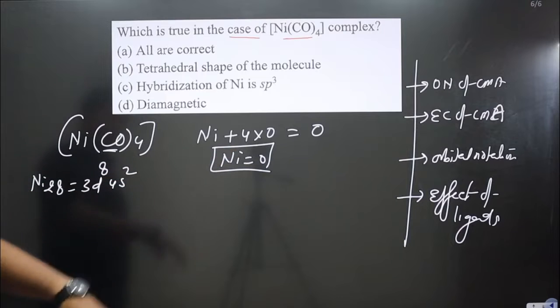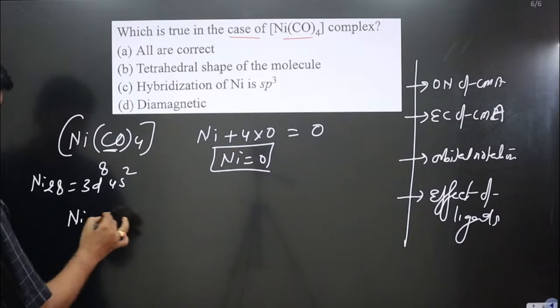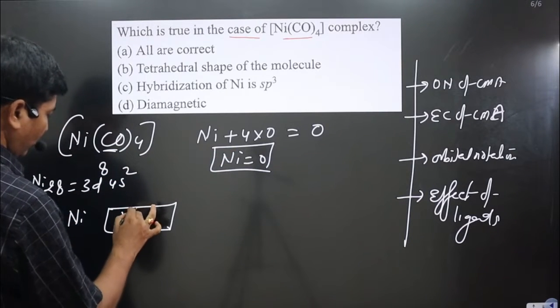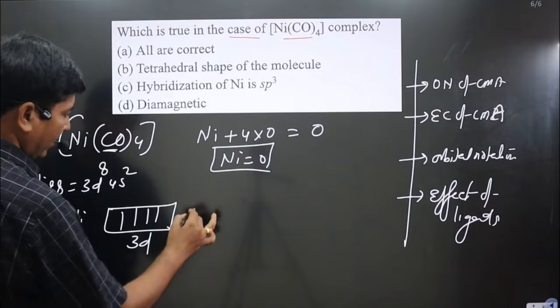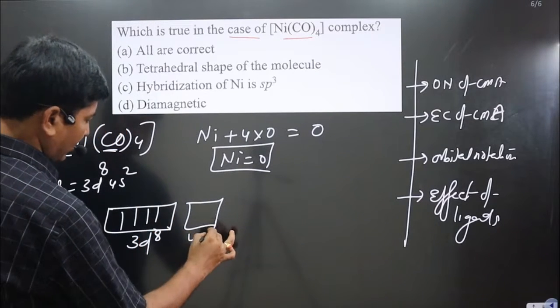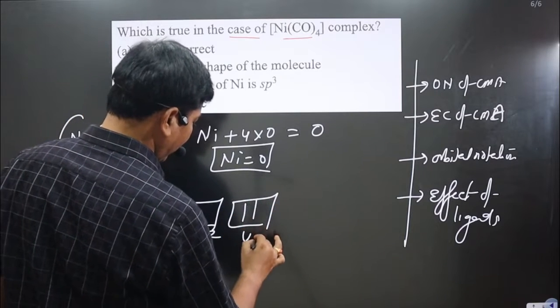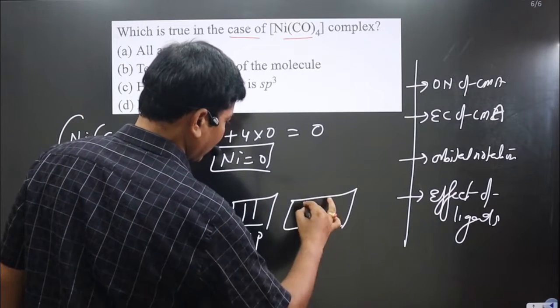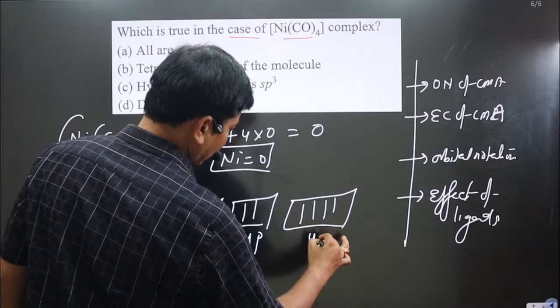Next we go for the orbital notation. For nickel we have 3d with 8 electrons, then 4s with 2 electrons, then 4p which is completely vacant, and 4d which is also completely vacant.